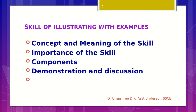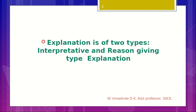In order to understand the concept and meaning of the skill, let us first understand its importance. So why do we give examples in a class? For a teacher, it is a challenging task to make the content understood by the learners. To do this, the teacher tries to give an explanation. Usually, explanation is of two types: interpretive type and reason-giving type. Interpretive type of explanation is typically given in social science content areas or in humanities.